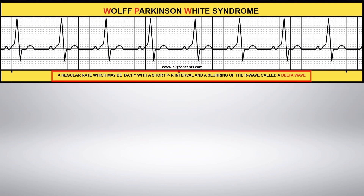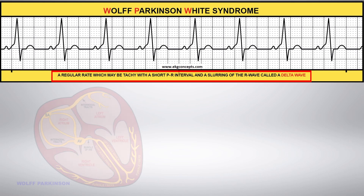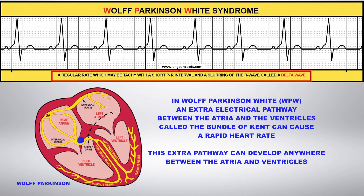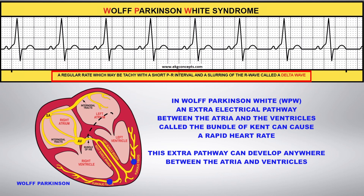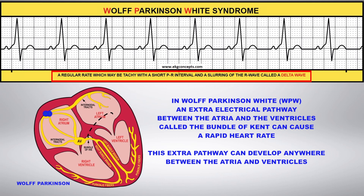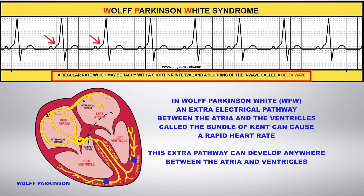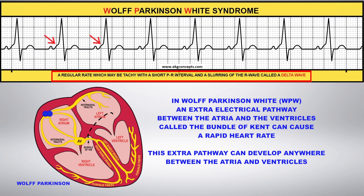Wolff-Parkinson-White Syndrome is caused by an accessory pathway that originates in the atrium and bypasses the AV node to the ventricles. Although the normal conduction occurs, an extra impulse traveling through the accessory pathway goes directly from the atria to the ventricles.